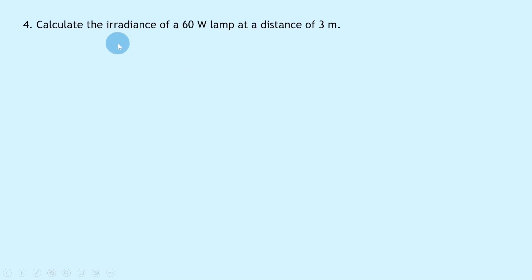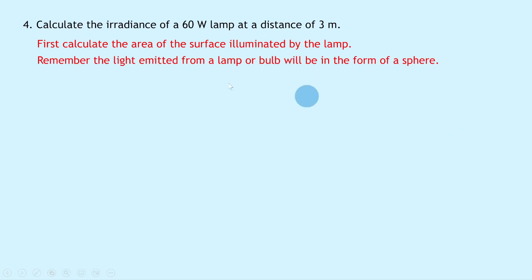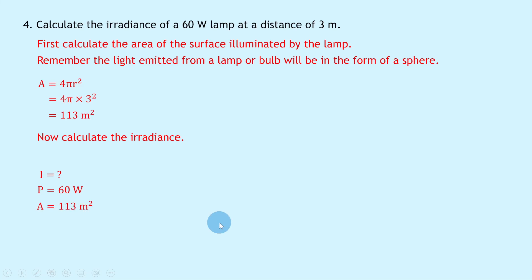Question four says to calculate the irradiance of a 60 watt lamp at a distance of 3 meters. We have a power and a distance rather than a surface area, so we can't go straight into I equals P over A. We first need to find the surface area using A equals 4πr². Substituting the distance of 3 meters as the radius: A equals 4π times 3 squared, giving 113 meters squared. Now we can find irradiance: P is 60 watts and A is 113 meters squared. I equals P over A gives 60 divided by 113, which equals 0.53 watts per square meter.